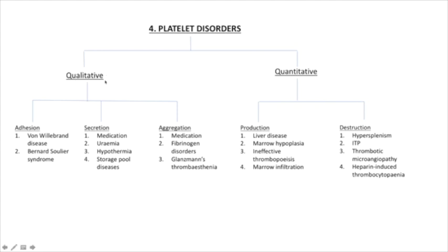Qualitative platelet disorders involve one of three processes: adhesion, secretion, or aggregation problems. Under adhesion issues, we consider von Willebrand disease or Bernard-Soulier syndrome, which is a genetic problem. Secretion platelet abnormalities can be caused by medications, uremia, hypothermia, and storage pool diseases. Under aggregation issues: medications, fibrinogen disorders, and Glanzmann's thrombasthenia. That gives us about nine causes of qualitative platelet disorders.